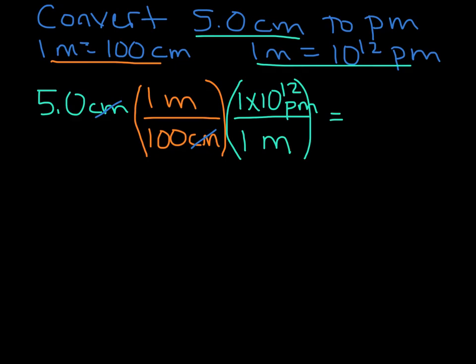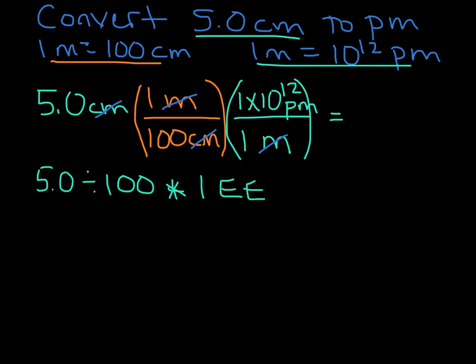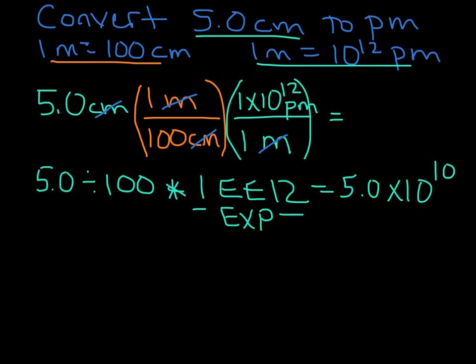Canceling out the meters, now we're in picometers. Putting this in the calculator: take our 5 centimeters and divide it by 100, then multiply by 1 times 10 to the 12 — using EE or EXP on your calculator, just put in the number and then the exponent. Once we calculate that, we end up with 5.0 times 10 to the 10 picometers. We started with 2 sig figs and we end with 2 sig figs.